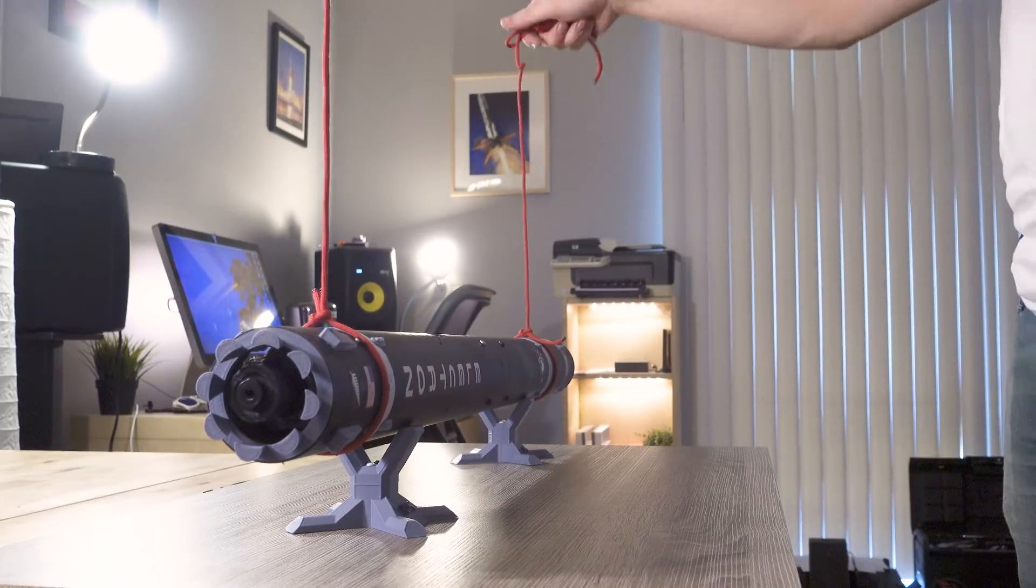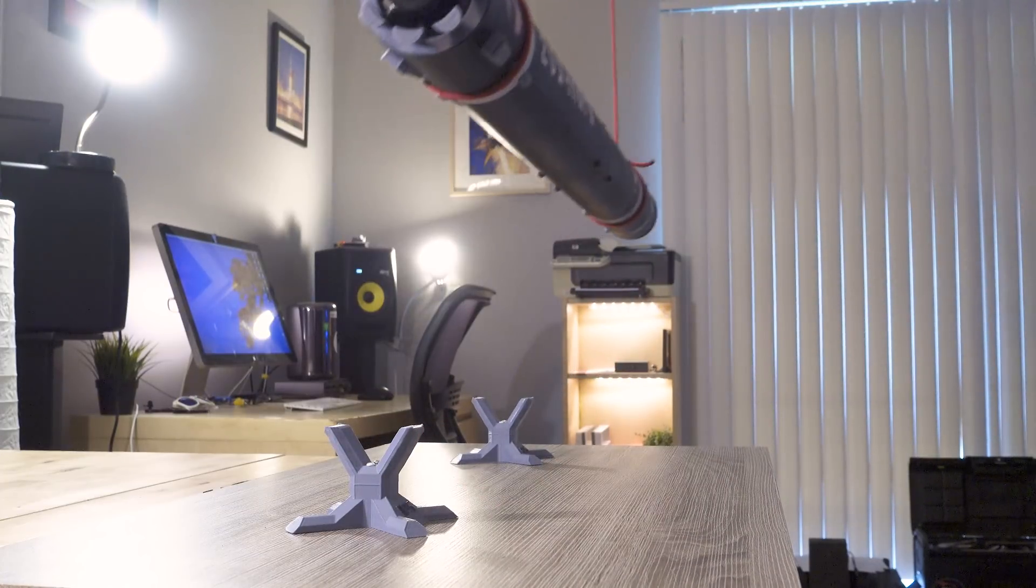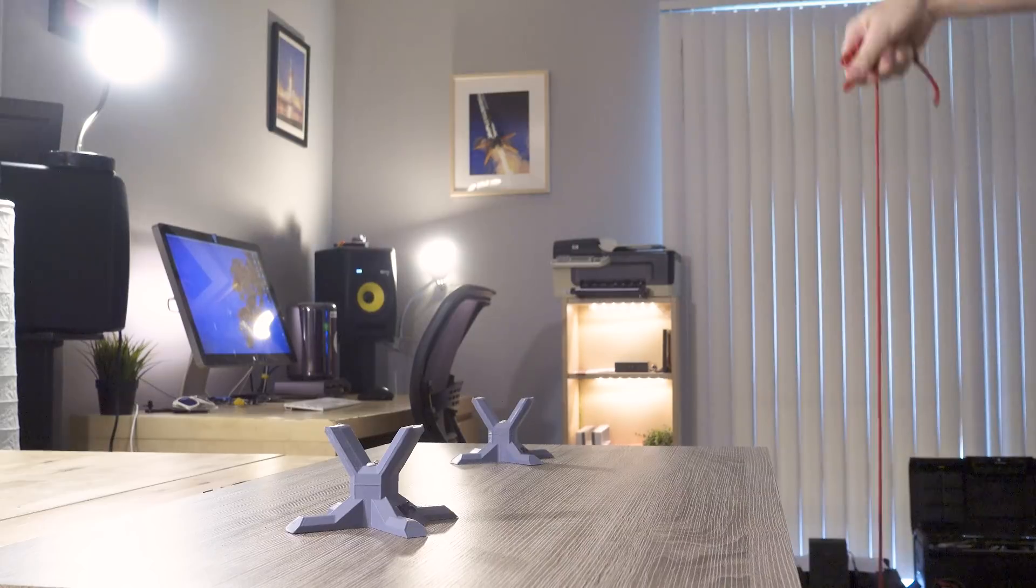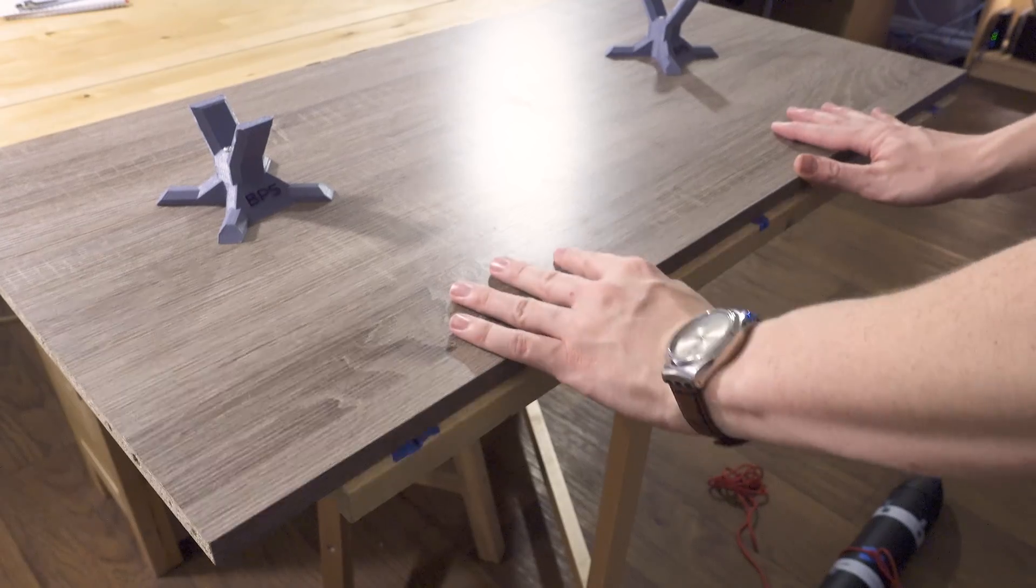Now I'll lift the rocket off the table and put it on the floor. I'm going to be hanging the rocket from the table's surface. You can hang it from a ceiling or any flat surface above the vehicle, though.